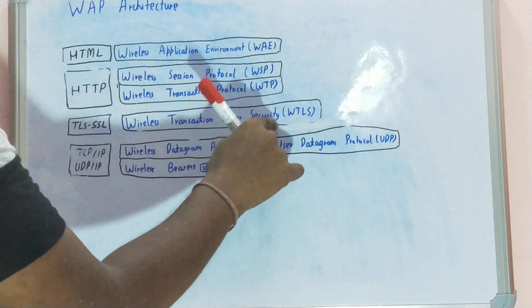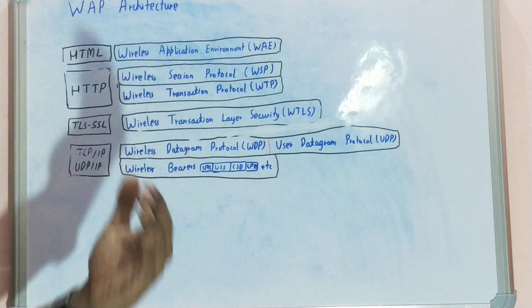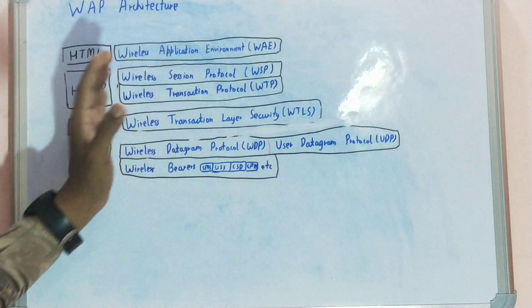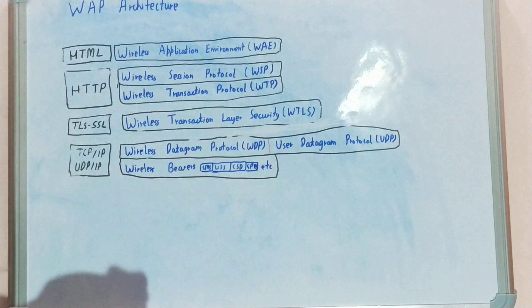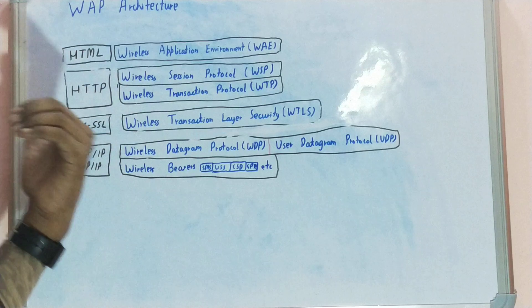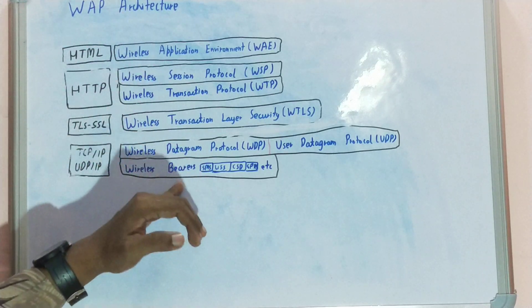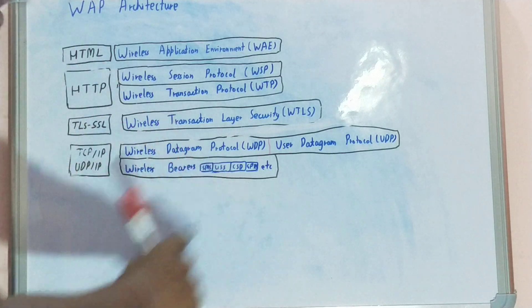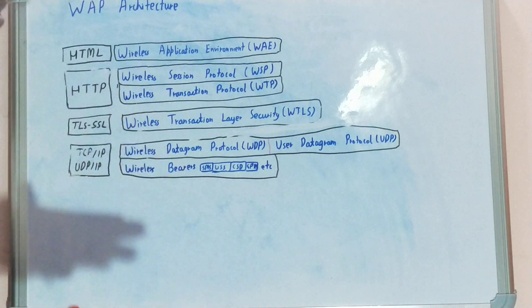Next one is Wireless Transaction Layer Security. From the name, its work is encryption and decryption of data that is being sent through WAP. Next is Wireless Datagram Protocol and User Datagram Protocol — these are protocols based on sending datagrams or data over the internet. The last one is the wireless bearer, which is the kind of service the user is using — SMS, GPRS, CDMA, etc.